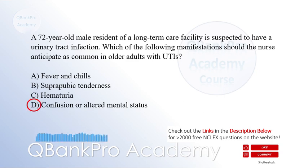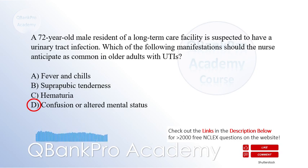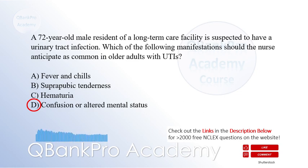D. Confusion or altered mental status. Explanation: Older adults with urinary tract infections often present with atypical symptoms. Confusion or altered mental status, also known as delirium, is a common manifestation in this population.